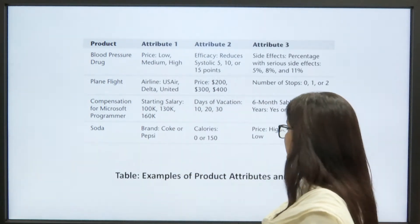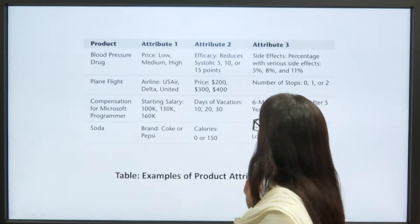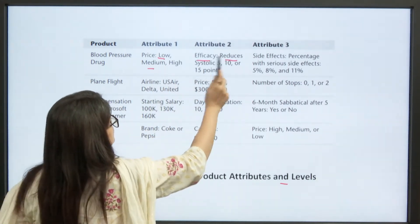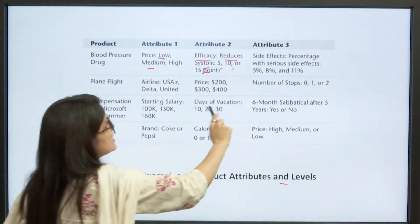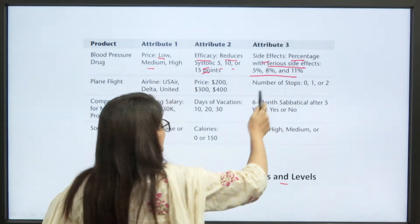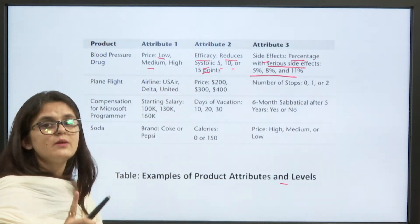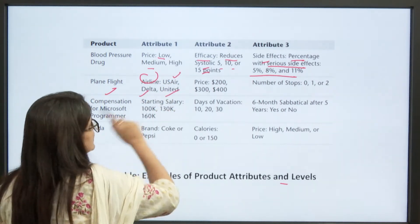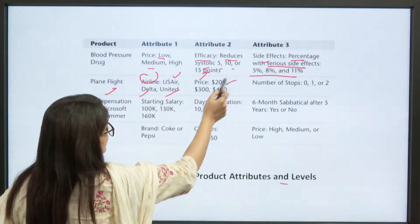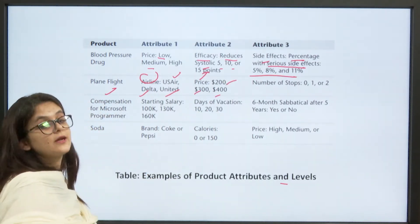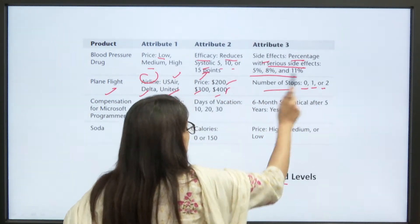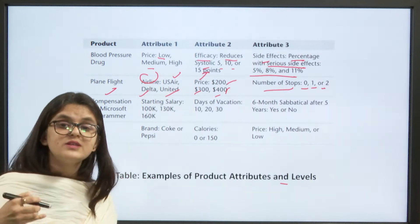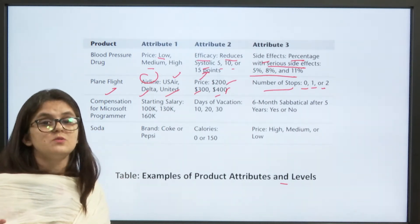For example, with a blood pressure drug as the product: price can be low, medium, or high; efficacy can be systolic reduction of 5, 10, or 15 points. For a plane flight: airline is US Airways, Delta Airways, or United Airlines; price is $200, $300, or $400; number of stops is 0, 1, or 2. These are different products, their attributes and levels, and on this basis the consumer makes decisions.